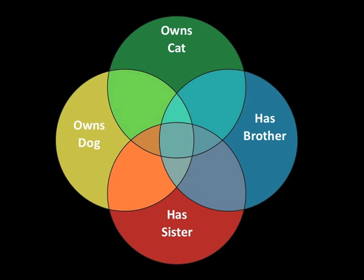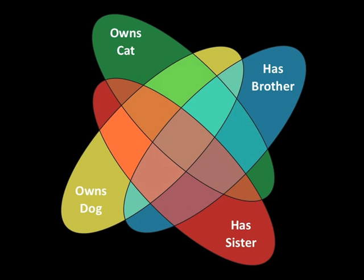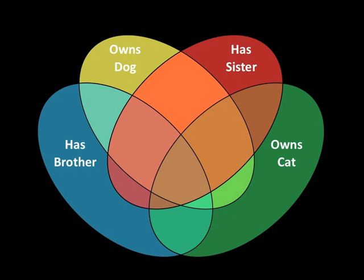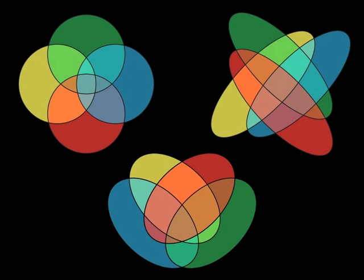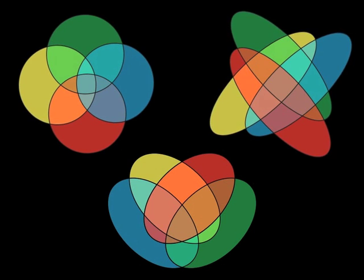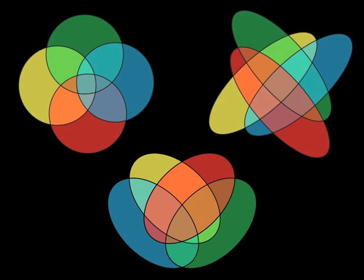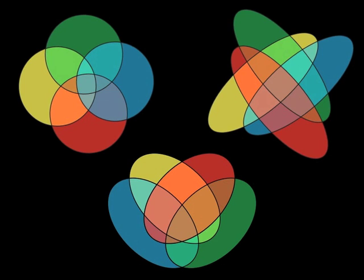Here's one example. Is this a Venn diagram? Is this a Venn diagram? Is this a Venn diagram? You have probably not strictly defined what a Venn diagram is, and that's a good thing — because now you open up your classroom to discussion.